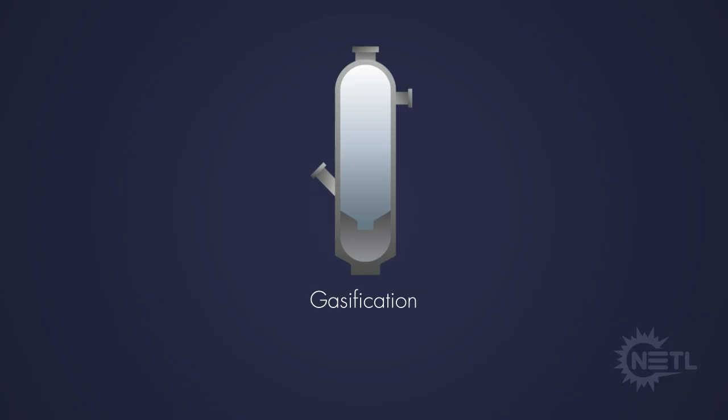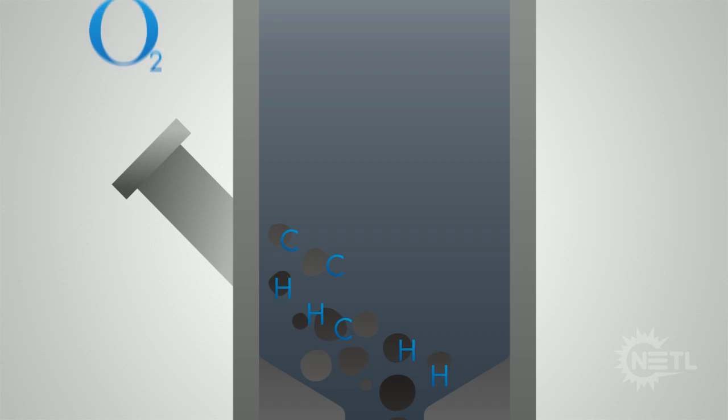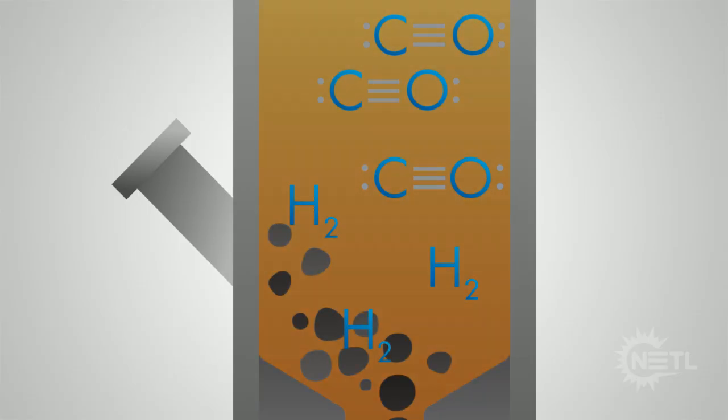Gasification is similar to fire, or combustion, but it occurs in a closed vessel. Less air is provided than for combustion, and water is added as steam. Oxygen chemically reacts with the carbon in the coal to become carbon monoxide. The hydrogen atoms in coal become hydrogen gas molecules. The water also provides oxygen to chemically react with carbon, leaving hydrogen behind. These chemical reactions give off heat, but less than if the coal were completely burned.